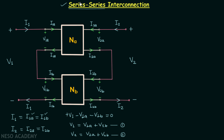Similarly, focusing on the output port: current I2A equals I2B — the output currents of both networks are the same — and V2 equals V2A plus V2B, so the output voltages add. Therefore, the output ports of the two networks are also in series. This is why we call this interconnection a series-series interconnection.